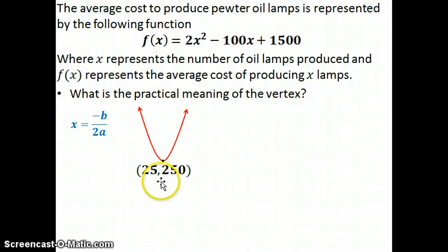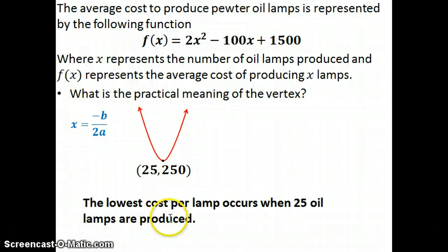You could write something about 25 oil lamps. The cost to produce 25, or the least cost to produce oil lamps, occurs at 25. I put: the lowest cost per lamp occurs when 25 oil lamps are produced. You could throw in the $250 in there as well - something along those lines would work just fine.